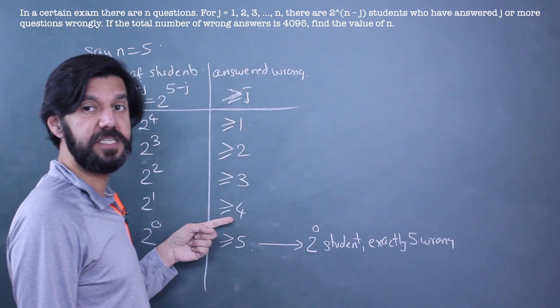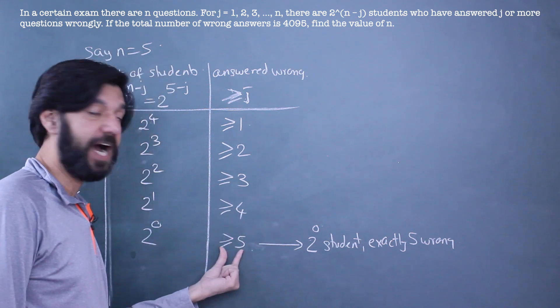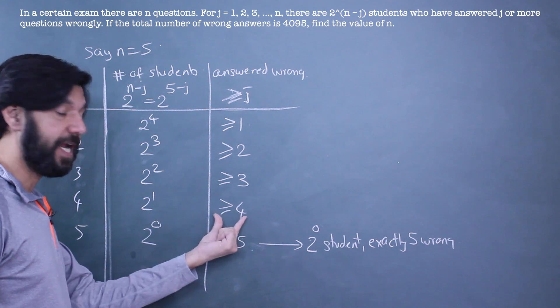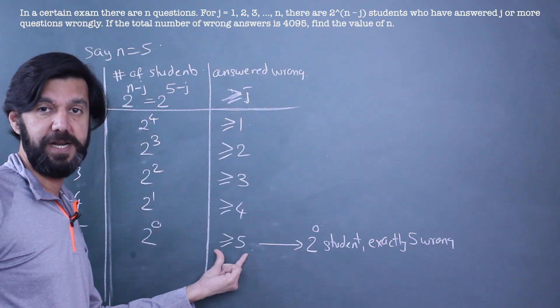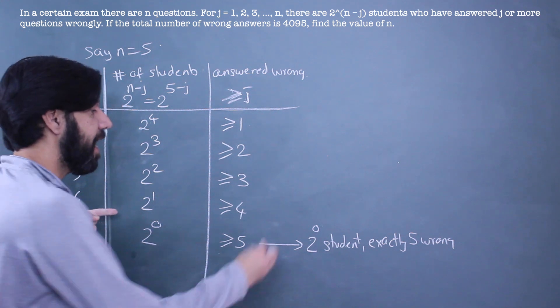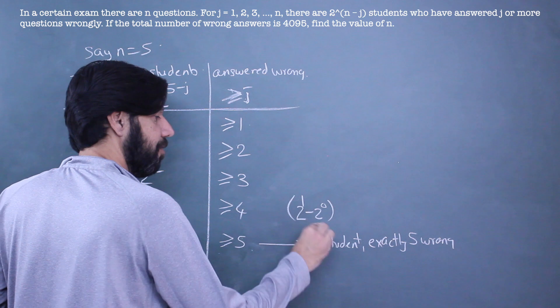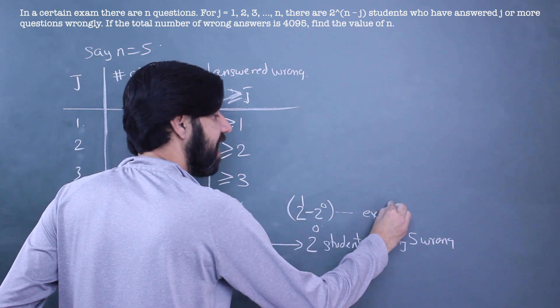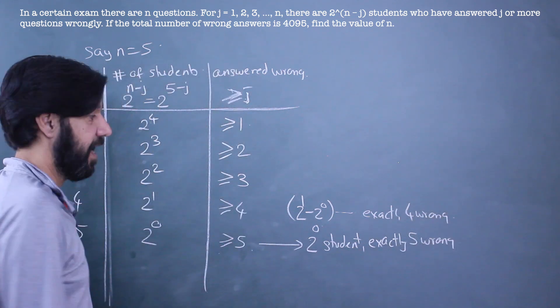Now if I look at this, this says 4 or more than 4, 4 or 5, but 5 are already counted here. So I could subtract. I'm saying greater than 4 is a bigger set which includes these people answering 5. So when I subtract, I'll be getting 2^1 - 2^0. These many students have answered exactly 4 wrong.